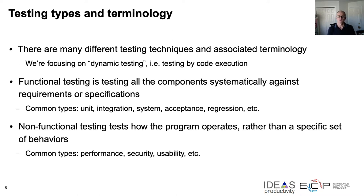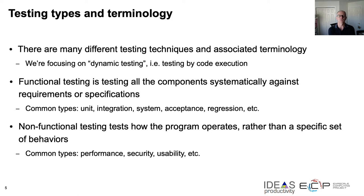There's a lot of theory and associated terminology about testing that can sometimes be confusing. For this tutorial, we're focusing on what's known as dynamic testing, which is testing by executing the code itself. Tests are also often separated into functional and non-functional types. Functional testing is systematic testing against a set of requirements or specifications, while non-functional testing is related to how the program operates or behaves, such as whether it can complete a task in a certain amount of time or if there are any security weaknesses or vulnerabilities.